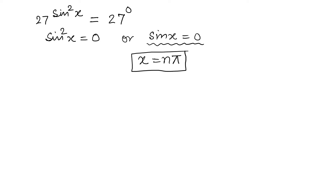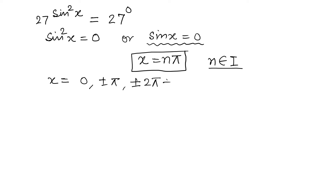Here n belongs to the integers, so x can equal 0, ±π, ±2π, ±3π, and so on — there are infinite solutions. This is the first solution set.